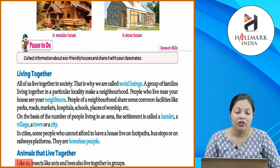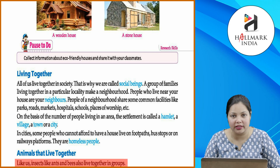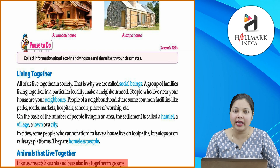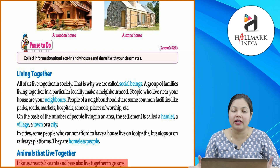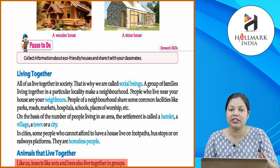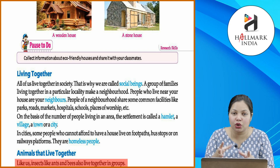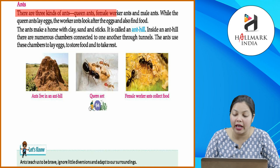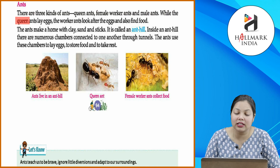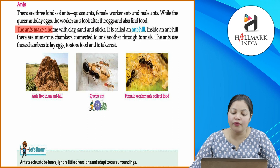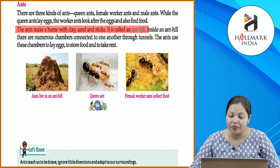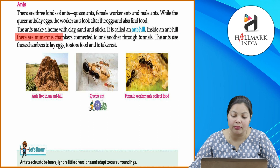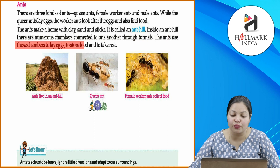Animals that live together: like us, insects like ants and bees also live together in groups. Hamari tarah hi insects jaise ke ants aur bees sab kya karti hain, ek group mein rehti hain. There are three kinds of ants: queen ants, female worker ants and male ants. While the queen ant lays eggs, the worker ants look after the eggs and also find food. The ants make a home with clay, sand and sticks. It is called an ant hill. Inside an ant hill there are numerous chambers connected to one another through tunnels. The ants use these chambers to lay eggs, to store food and to take rest.